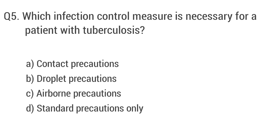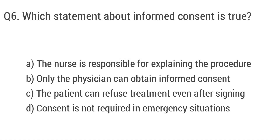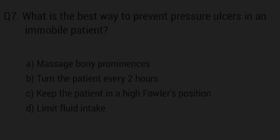Question 5: Which infection control measure is necessary for a patient with tuberculosis? The right answer is option C: Airborne precautions. Question 6: Which statement about informed consent is true? The right answer is option C: The patient can refuse treatment even after signing.